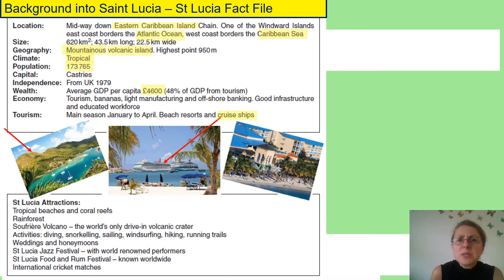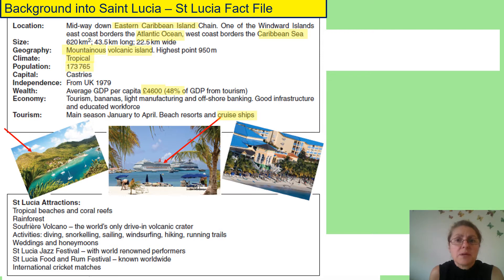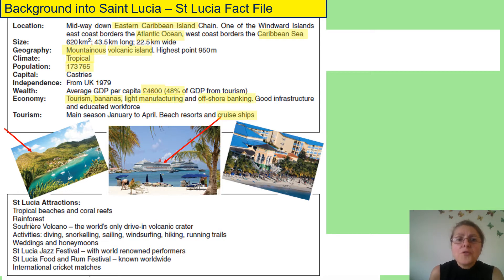Tourism is 48% of the GDP — nearly half the income made for the government by the island — showing how important it is to increase tourism and thereby increase the country's GDP. There are other industries in Saint Lucia as well: bananas, tourism, light manufacturing, and offshore banking. The main tourist season runs from January to April, followed by the rainy season from May to November, though people still holiday during that time. Beach resorts and cruise ships are a big pull for tourists.